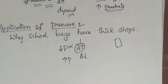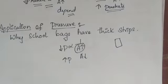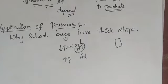Another application to think about: why do we use a sharp knife to cut vegetables and not a blunt knife? I hope everyone has understood the concept and the difference between thrust and pressure, which is a very important concept in this chapter. We will discuss the next concept in the next class. If any doubt is there, we will discuss in a live session. Thank you.